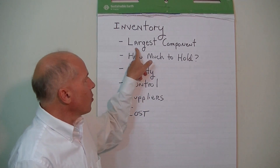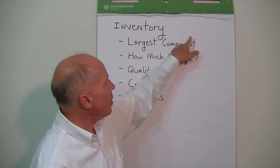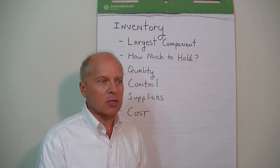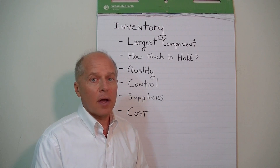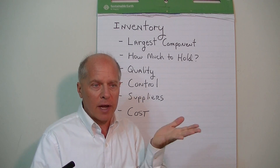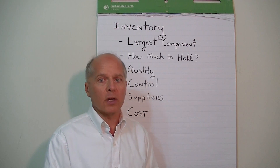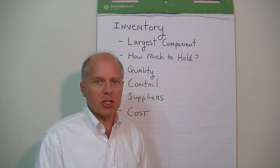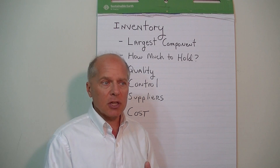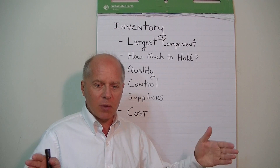Inventory is probably the largest component of working capital, or one of the largest. When you break down the components — cash, receivables, accounts payable, notes payable on the current liability side, and current assets — inventory tends to be a very large component, so it warrants a lot of attention and management control to make sure we're properly managing it.